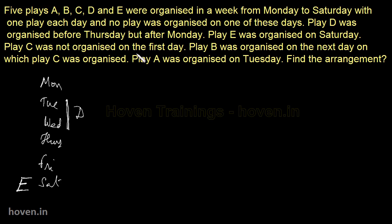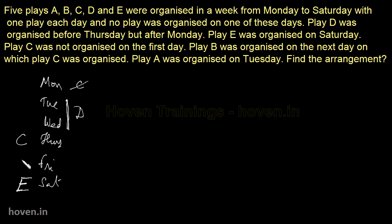Play C was not organized on the first day, so C didn't come on Monday — we will write a cross here. So C is either on Thursday or Friday, we will keep that in mind. Play B was organized on the next day on which play C was organized. C can't come on Saturday because E is already there. C can't come on Friday because after C, B was organized. So C will come on Thursday and B on the next day — Friday. So two of them have been fitted.